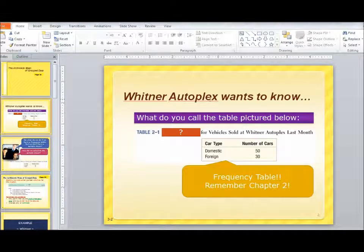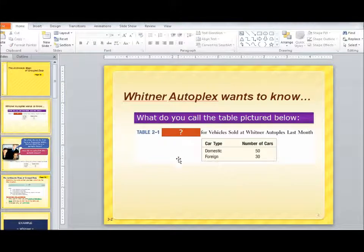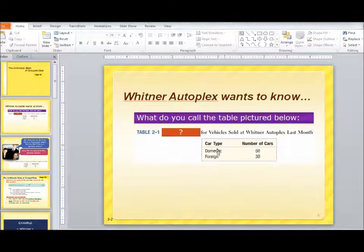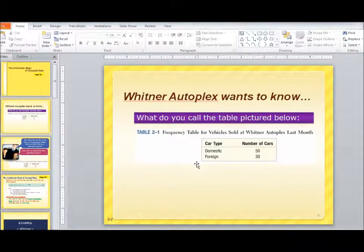This typically happens in an example like the one the book provided here of Wittner Autoplex. Do you remember this? What do you call this particular table when I have a listing of some labels and then a count of how often or how frequent this listing of domestic or foreign occurred? Well, of course, we call this a frequency table.